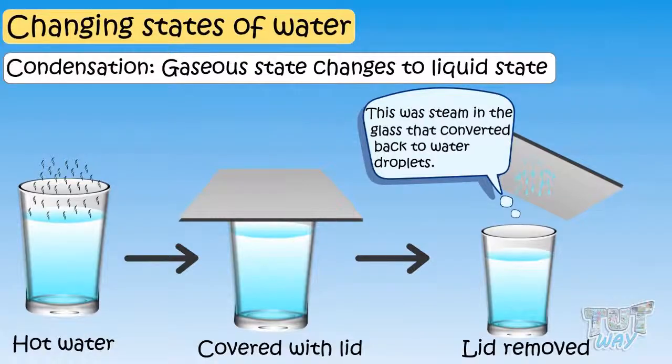This is the steam in the glass that converted back to water droplets. This is the process where steam of water or gaseous form of water changes to liquid form of water, and the process is called condensation.